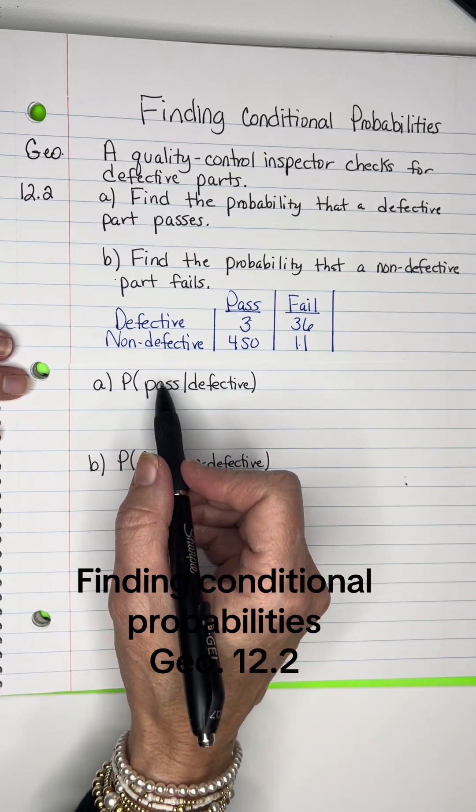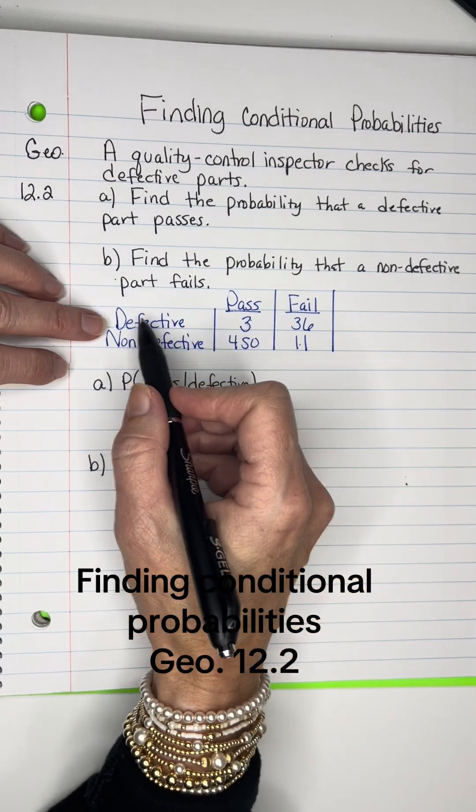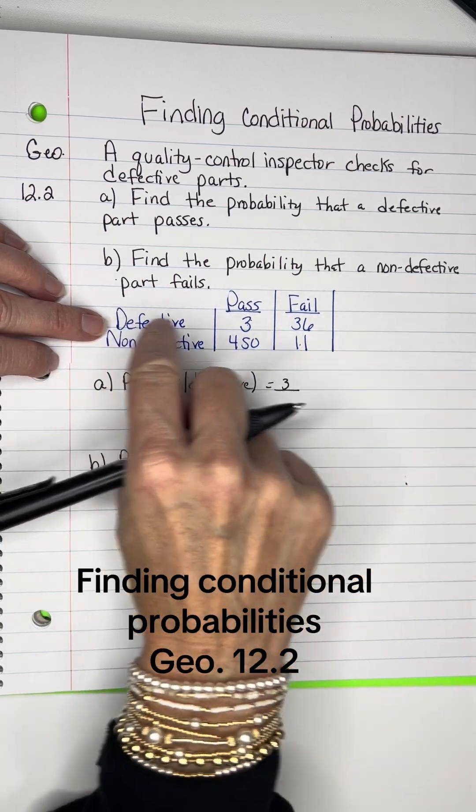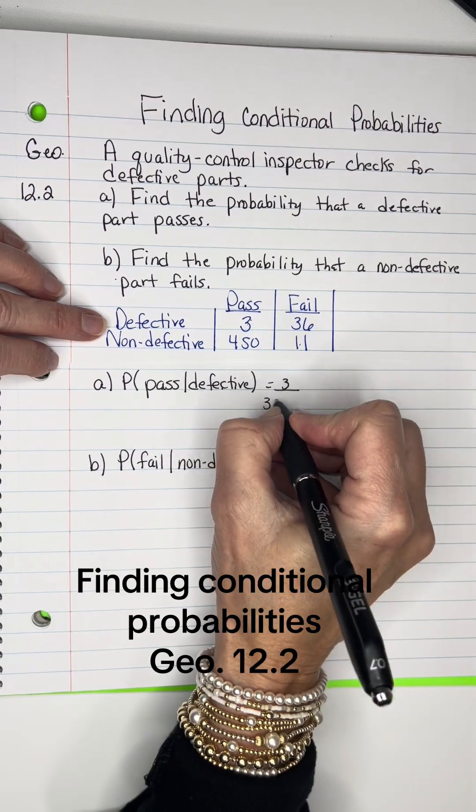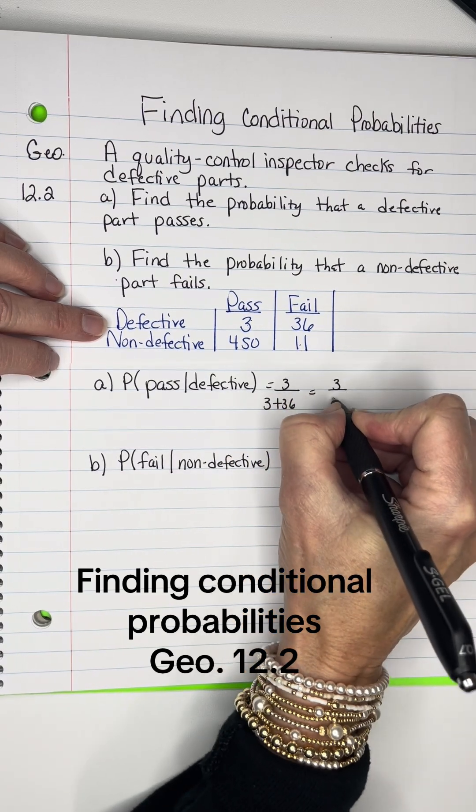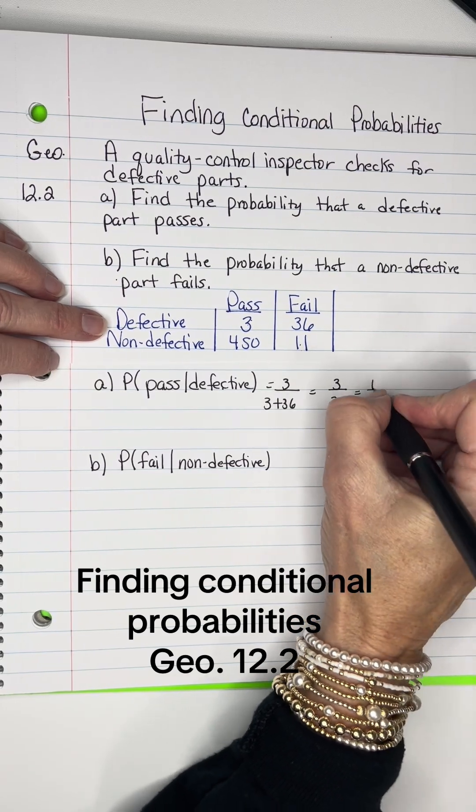Let's find the probability that they passed and they were defective. Looking at this row here, three passed out of how many were defective? There was 36 plus 3 that were actually defective. So that's 3 out of 39. If I reduce those by dividing them by 3, I get 1 out of 13.